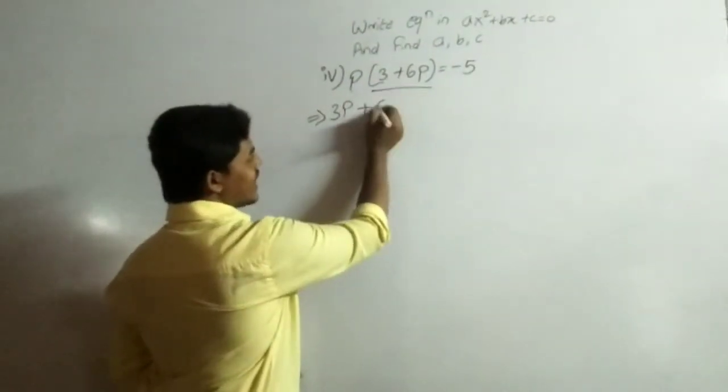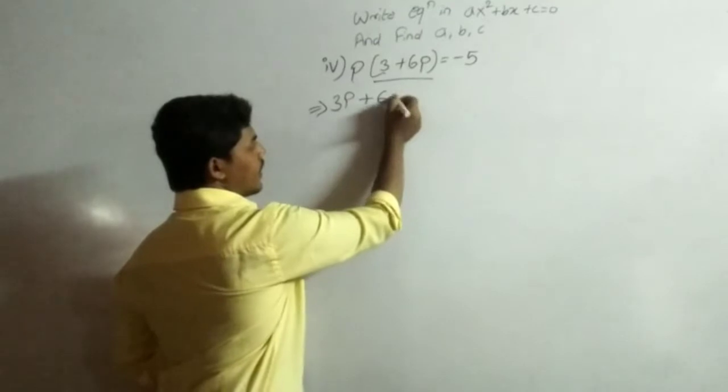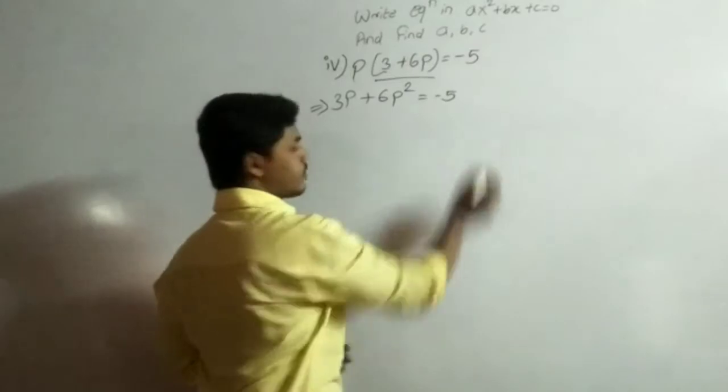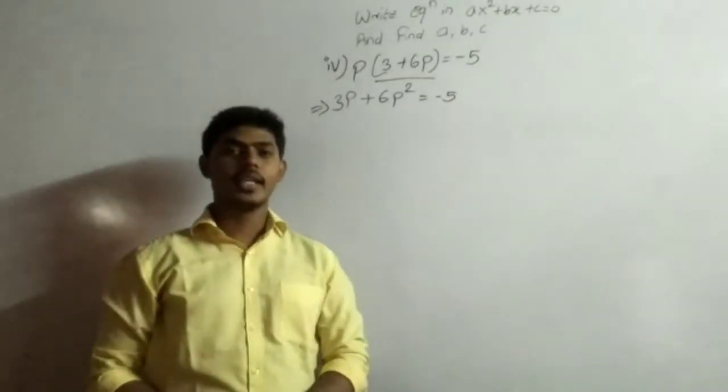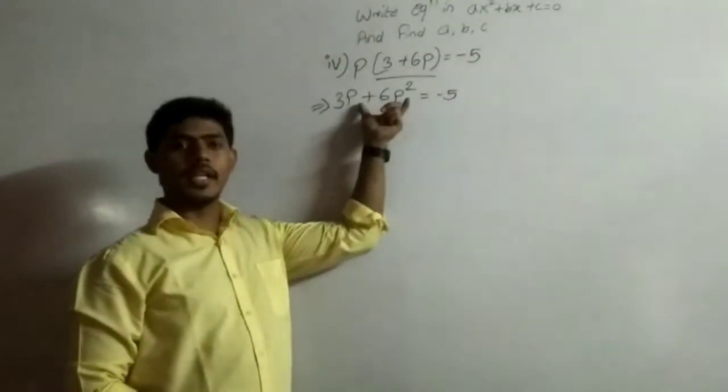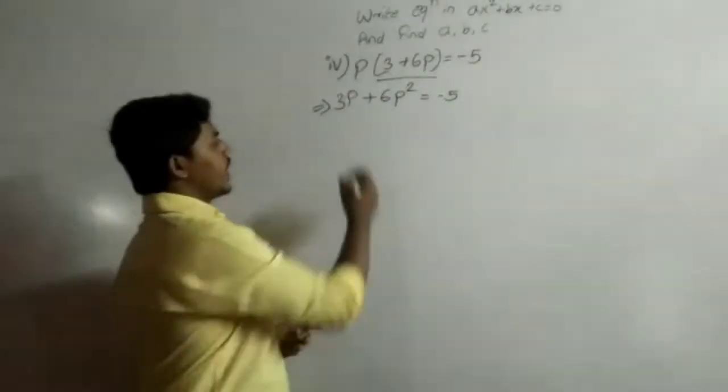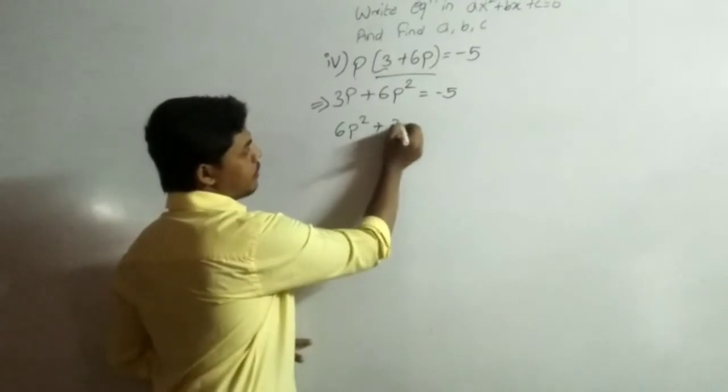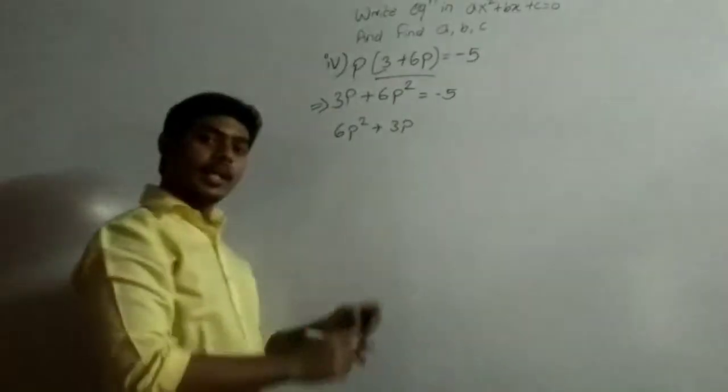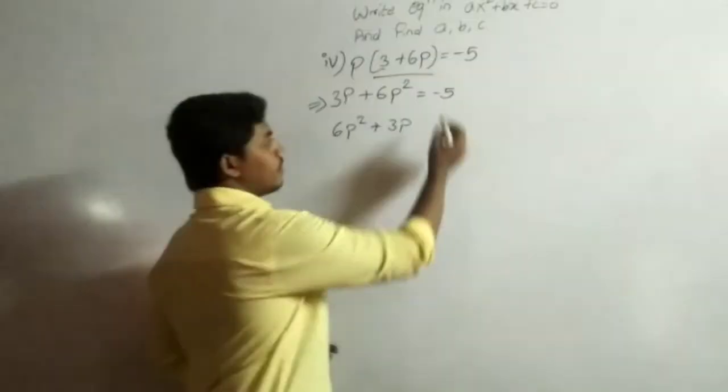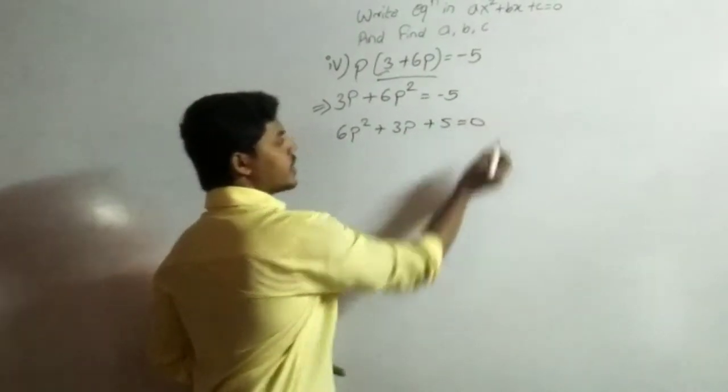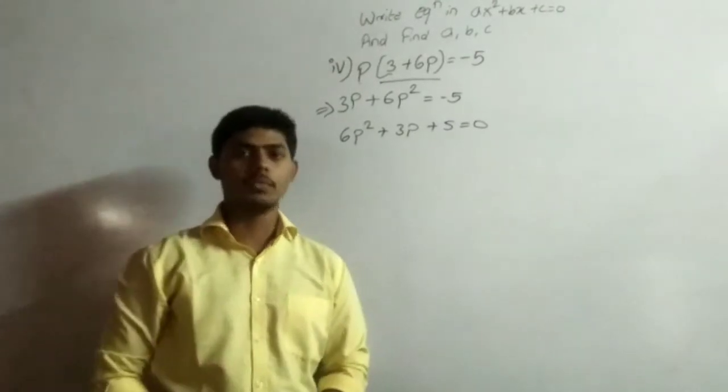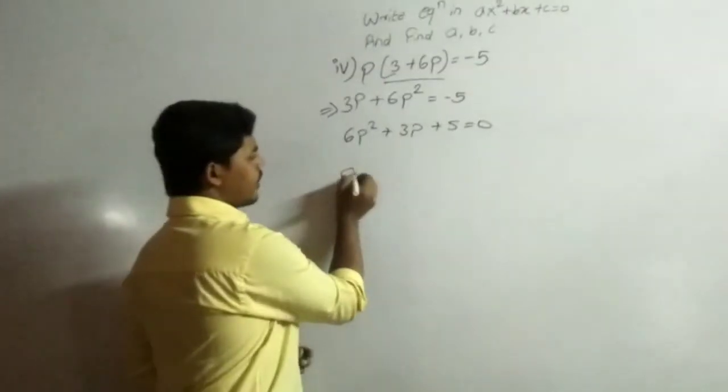Then, we can solve it in a bracket. Then 6p square, 6p square and we have 2nd variable 3p and minus 5 convert in left hand side then minus convert plus, then plus 5 equals 0. This is your equation.